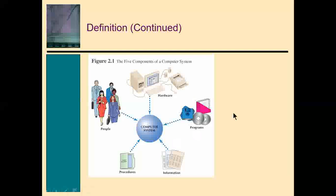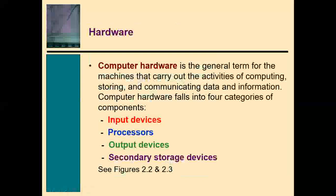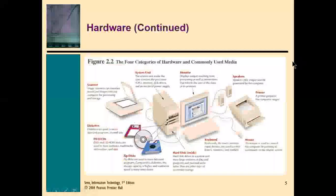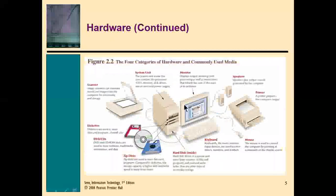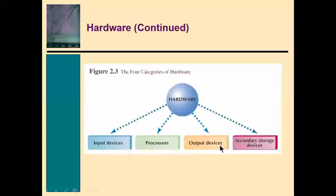Now let's begin with hardware. Hardware refers to the physical components that you can see and touch on the computer. There are four categories: input devices, the processor, output devices, and secondary storage devices. This diagram explains all these major categories of computer hardware components — hardware is made up of all four of these.